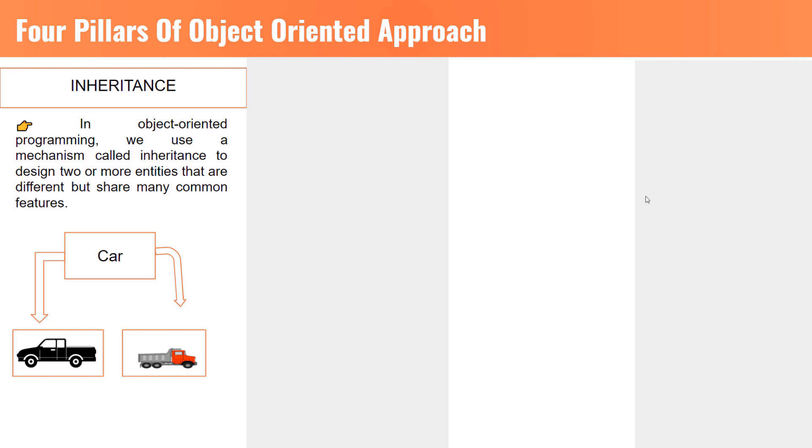This is called inheritance. So, once you create a separate class for the common attributes and methods, you can use it in both other classes. Like, the common attributes can be wheels, doors, mirrors and others.